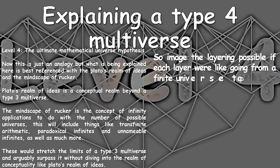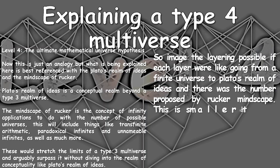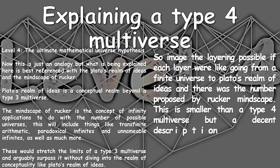Imagine the possible layering you can get if each layer was going from a finite universe to Plato's realm of ideas, and the number of layers was that of Rucker's Mindscape — with its massive, paradoxical, and unnamed infinities. This description is still smaller than a Type 4 multiverse. However, it does get the idea that it is very, very large.